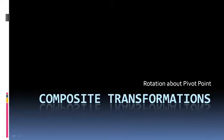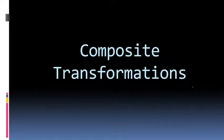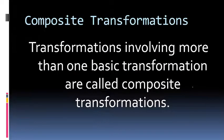Dear students, in this video we will learn about composite transformations. To have a better understanding of the concept, we will take up a case study of rotation about a pivot point. As you know, in the previous video we had learnt about rotation about the origin. You will see that this rotation about pivot point is eventually an extension to that. Whenever we make multiple basic transformations, we get composite transformations — transformations involving more than one basic transformation are called composite transformations.